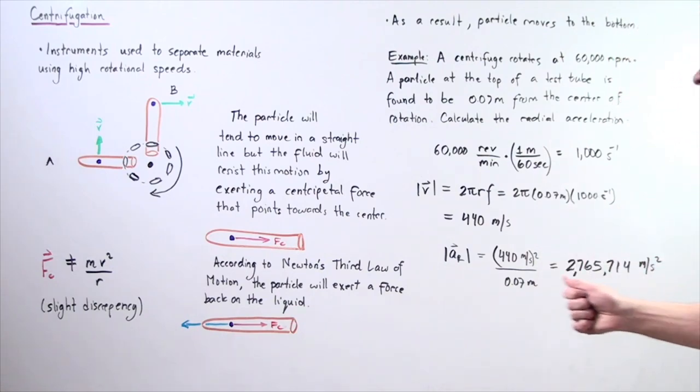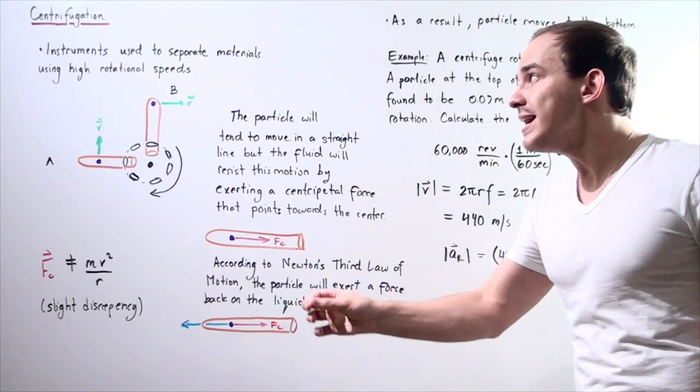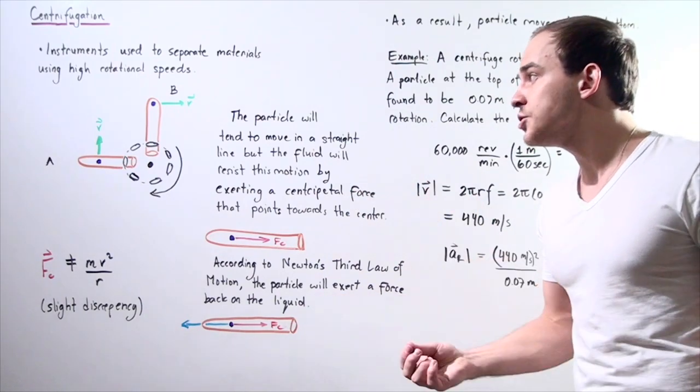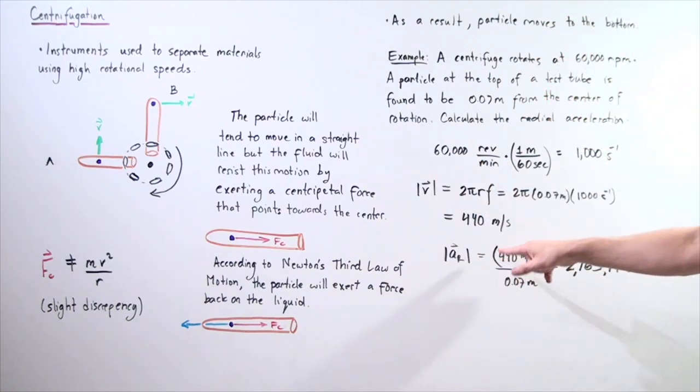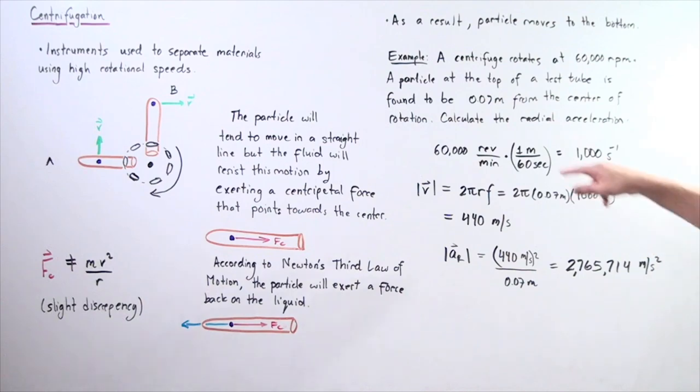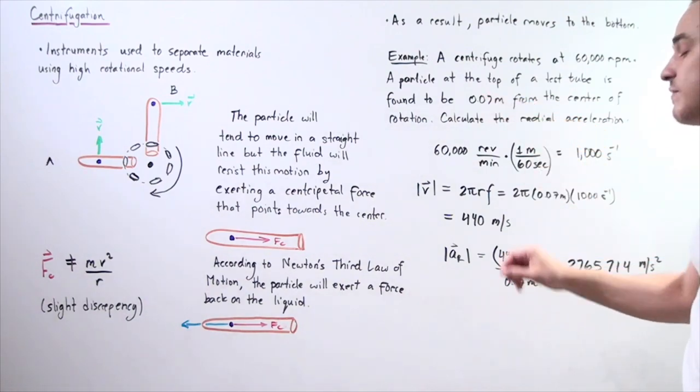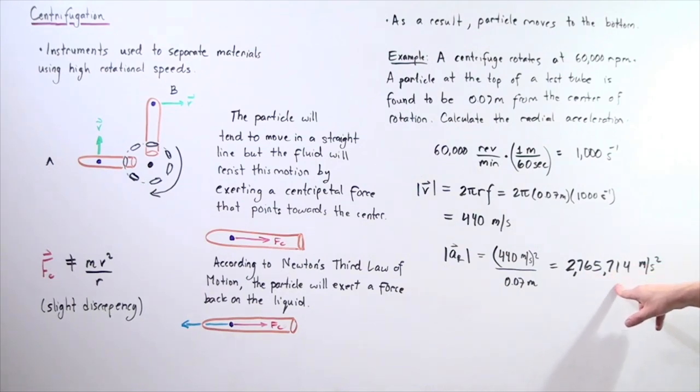And finally, we calculate our magnitude of radial, of centripetal acceleration of the particle. So, we square the velocity, 440 squared, divide that by our radius, 0.07 meters and we get 2,765,714 meters per second squared.